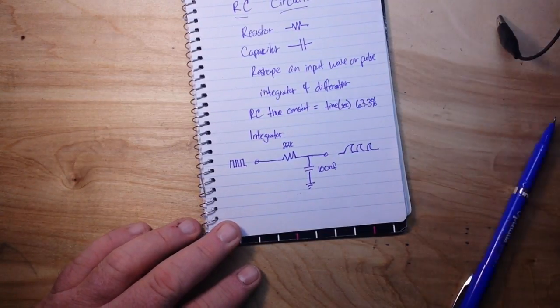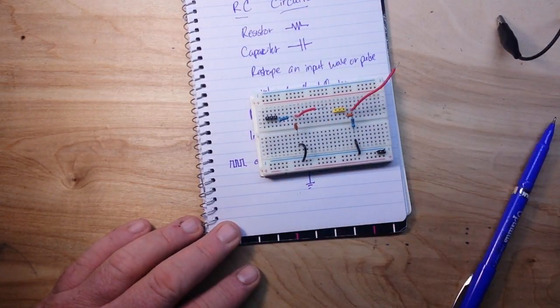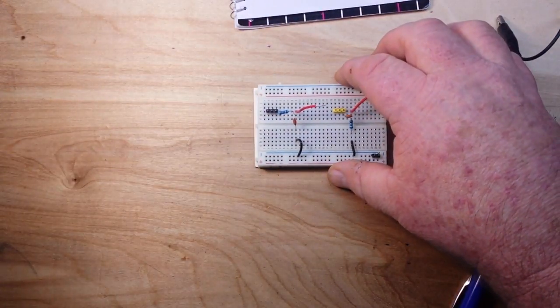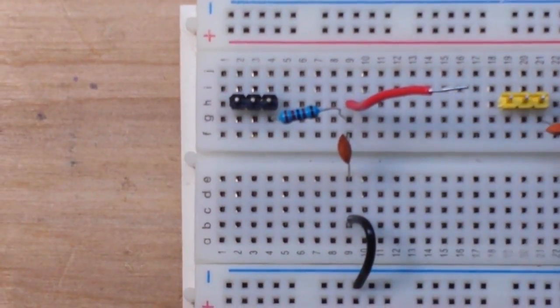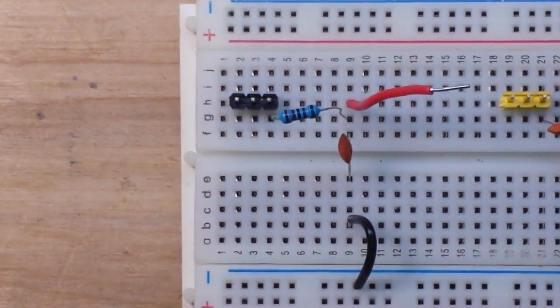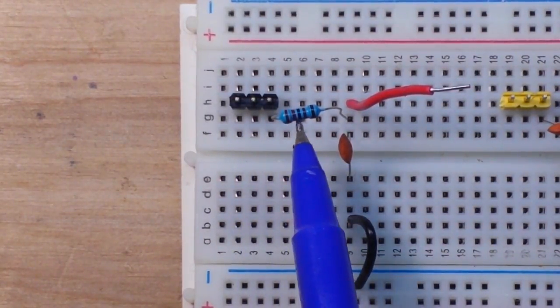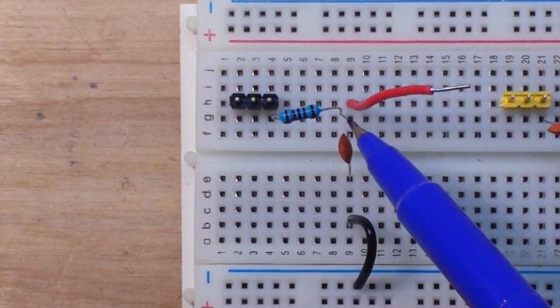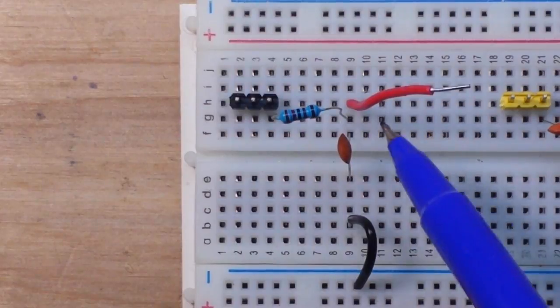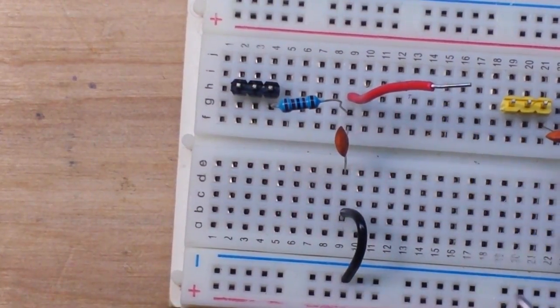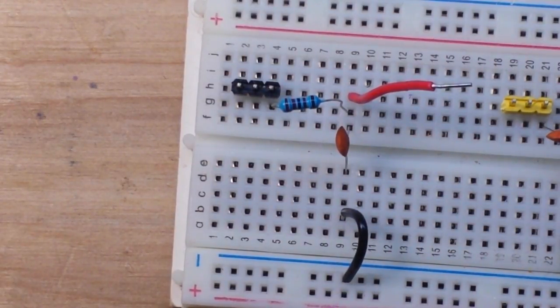Here I have mocked up our little circuit. Our input is going to come in here, go through the resistor. The capacitor will then draw off some of the current pulling it to ground, and we'll take our output right here. So let's take a look now at the scope.